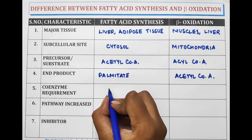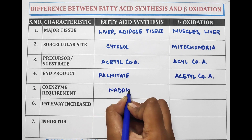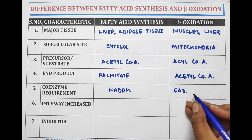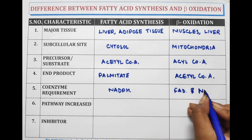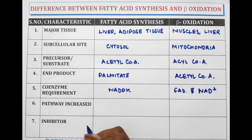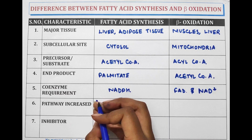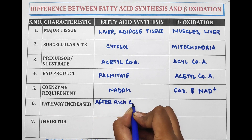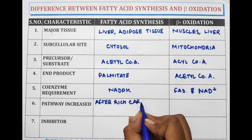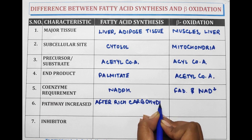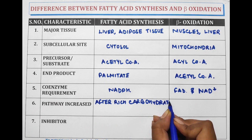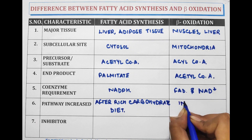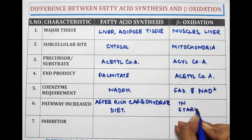Coenzyme requirement for fatty acid synthesis is NADPH, and for beta oxidation it is FAD and NAD+. The pathway is increased in fatty acid synthesis after a rich carbohydrate diet, and in the case of beta oxidation the pathway is increased during starvation.